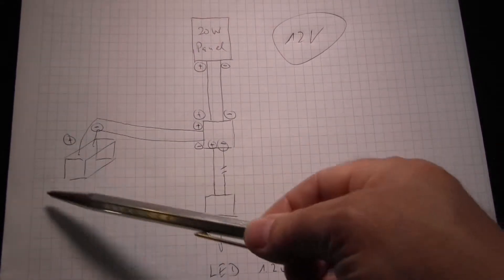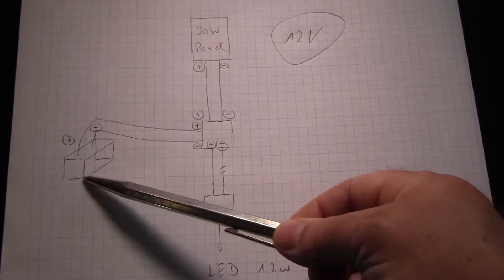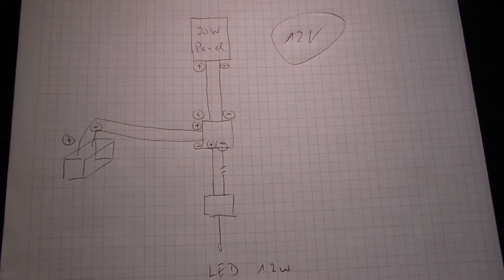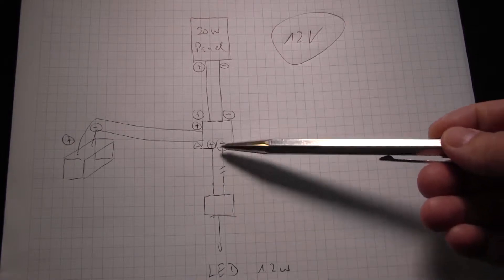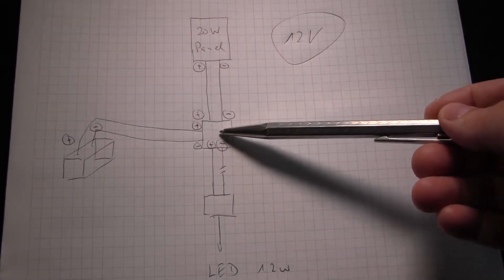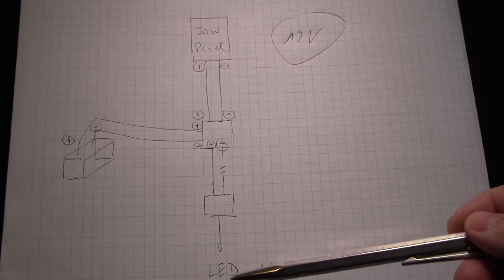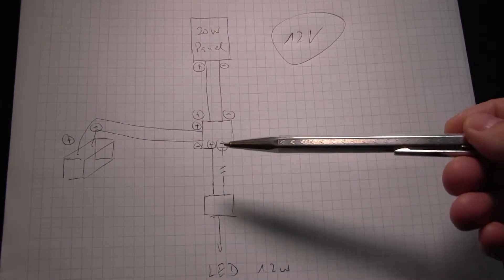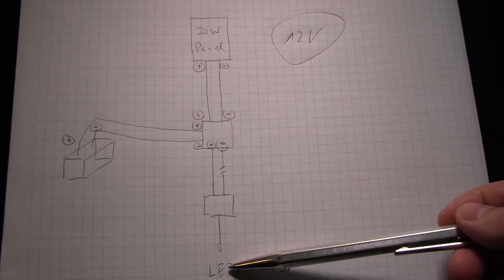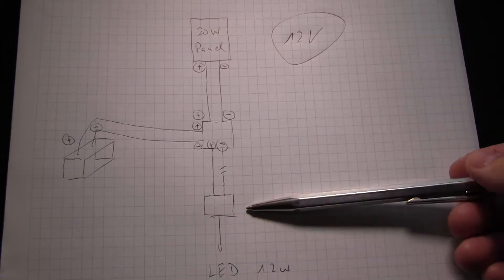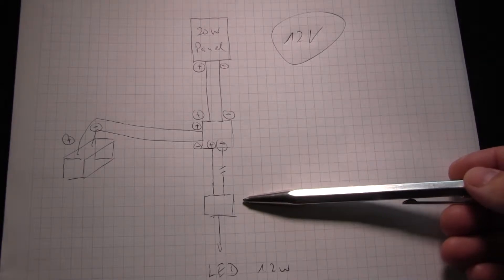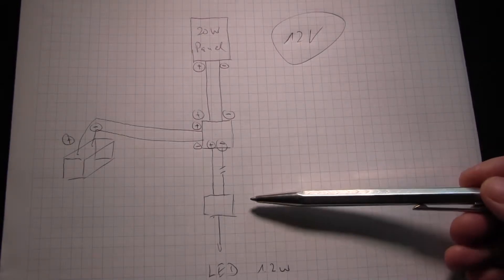There is the 20 watt panel which goes into the charge controller, and the charge controller is also connected to the battery which is a 12 volt battery with a capacity of 7 to 8 amp hours. Then the charge controller connects to the LED light which is at the end, and between the charge controller and the LED light there is the twilight sensor or switch.